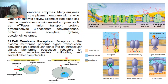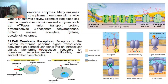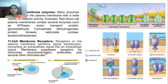The cell membrane also does the function of cell signaling, done by receptors. Receptors on the plasma membrane perform signal transduction — the message, which may be in the form of a hormone, is sensed by the surface of the plasma membrane and the signal is passed by signal transduction, converting an extracellular signal into an intracellular signal. The receptors are proteins present on the surface of the plasma membrane that may receive signals in the form of hormones, neurotransmitters, antibodies, and several other biomolecules.